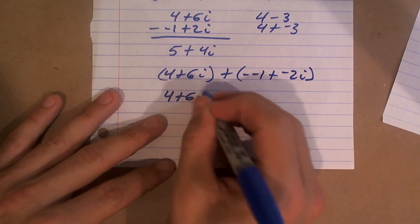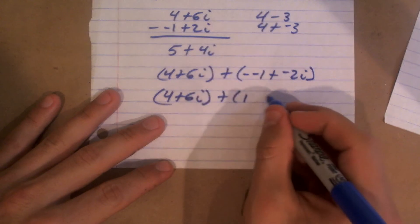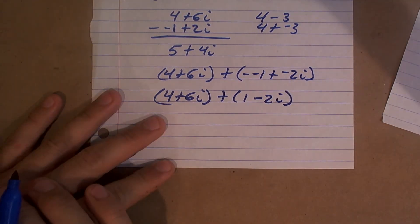So 4 plus 6i plus, now that becomes a positive 1 minus 2i, right?